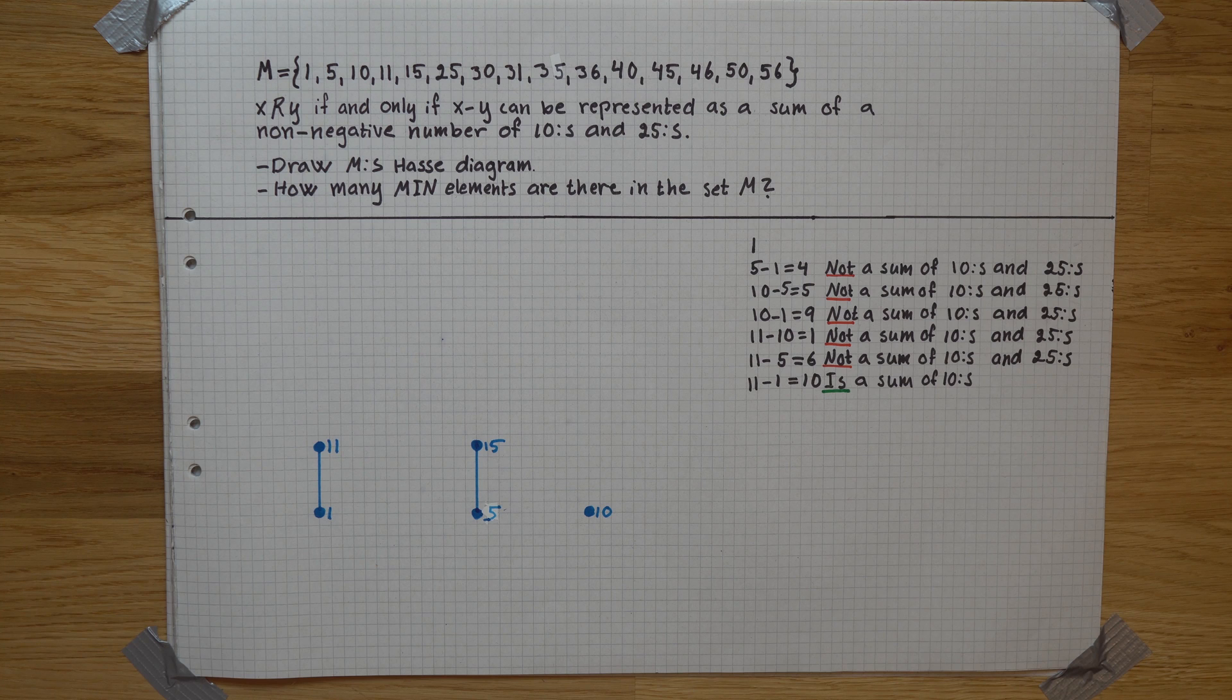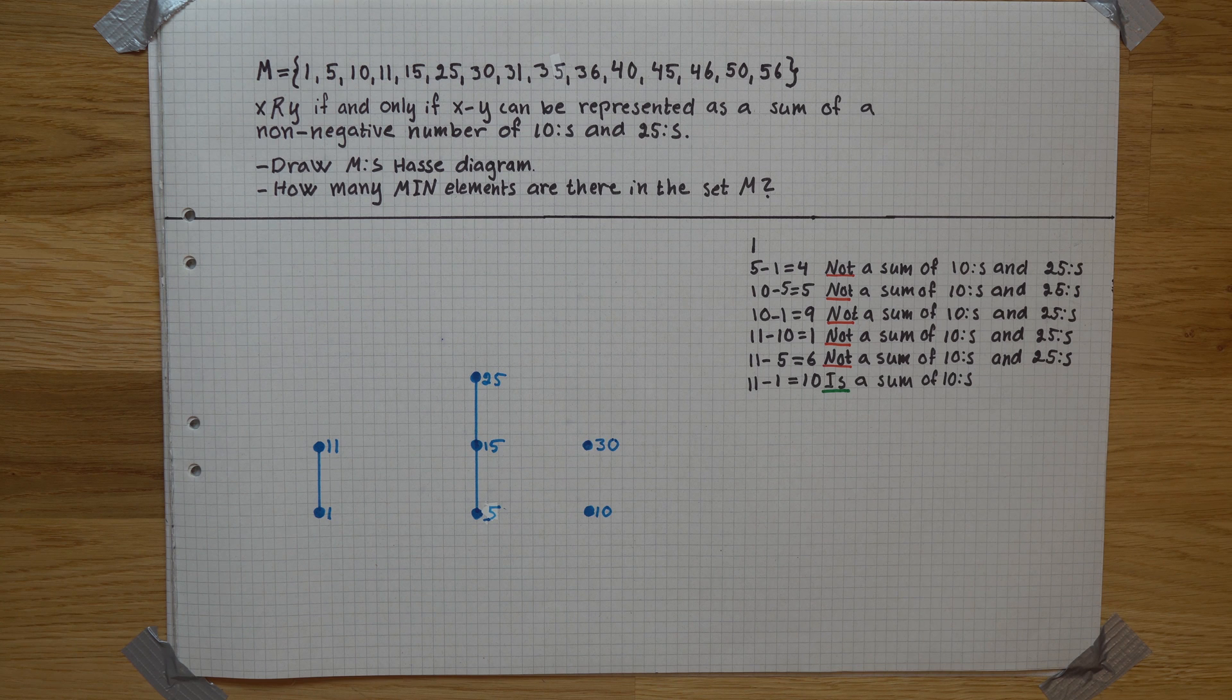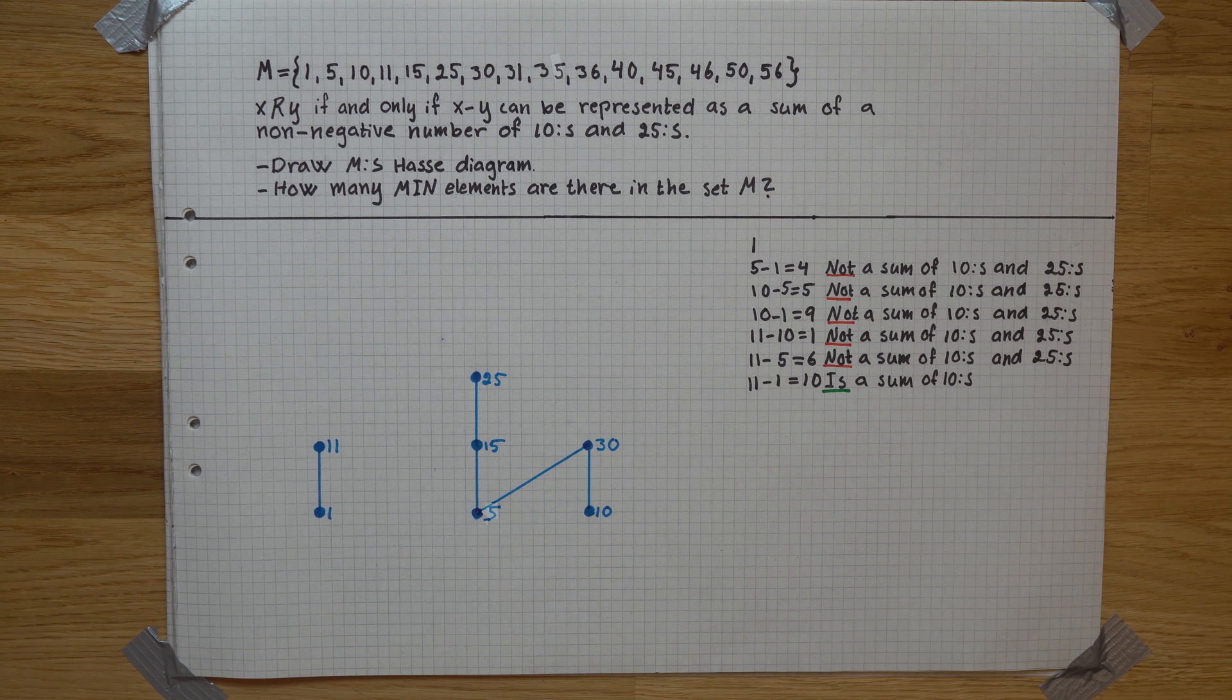15 is only working for 5, and 25 is only connected to 15. 30, on the other hand, is a sum of 10s and 25s both when I subtract 10 and 5.